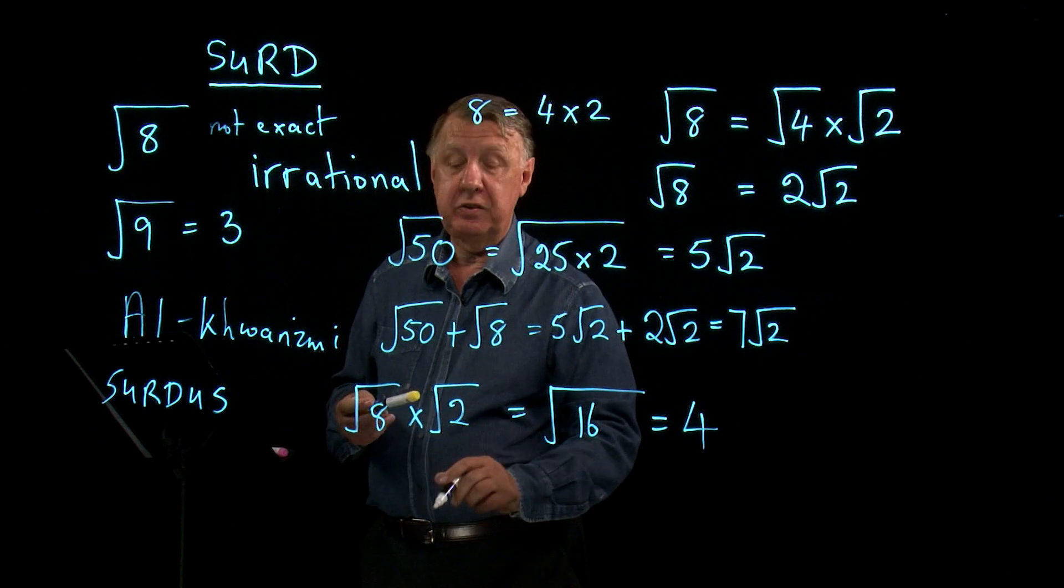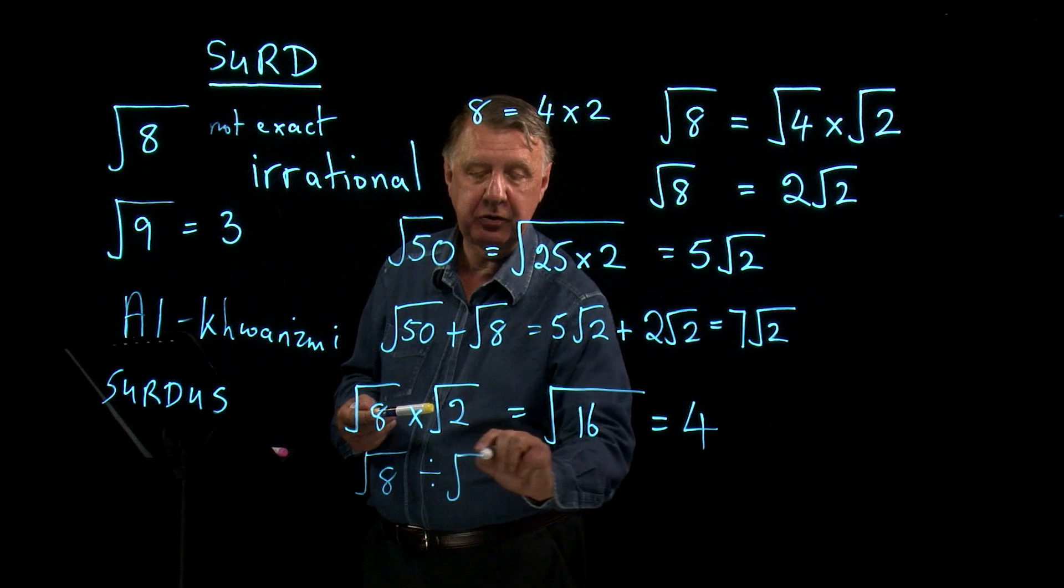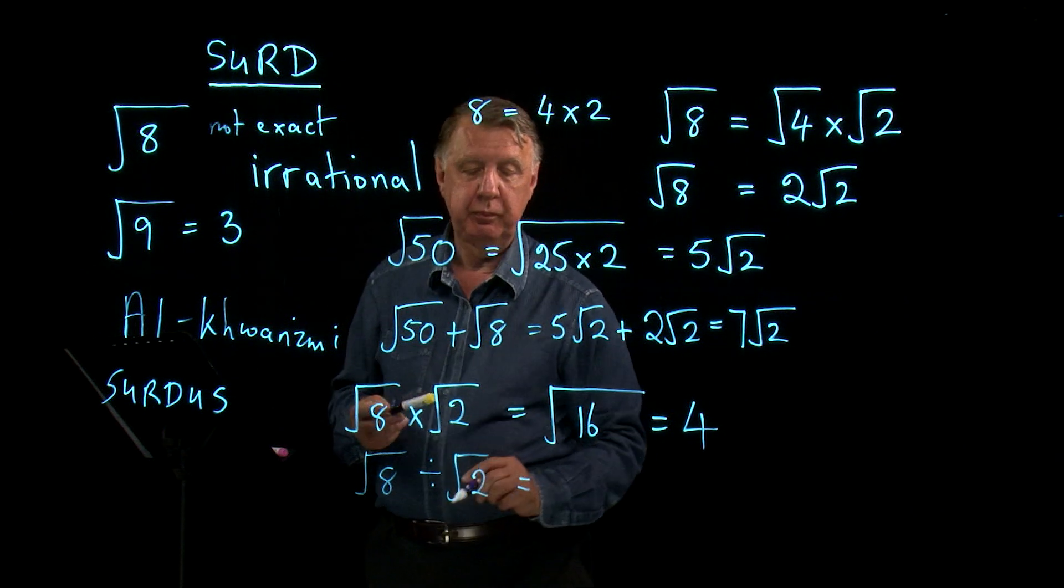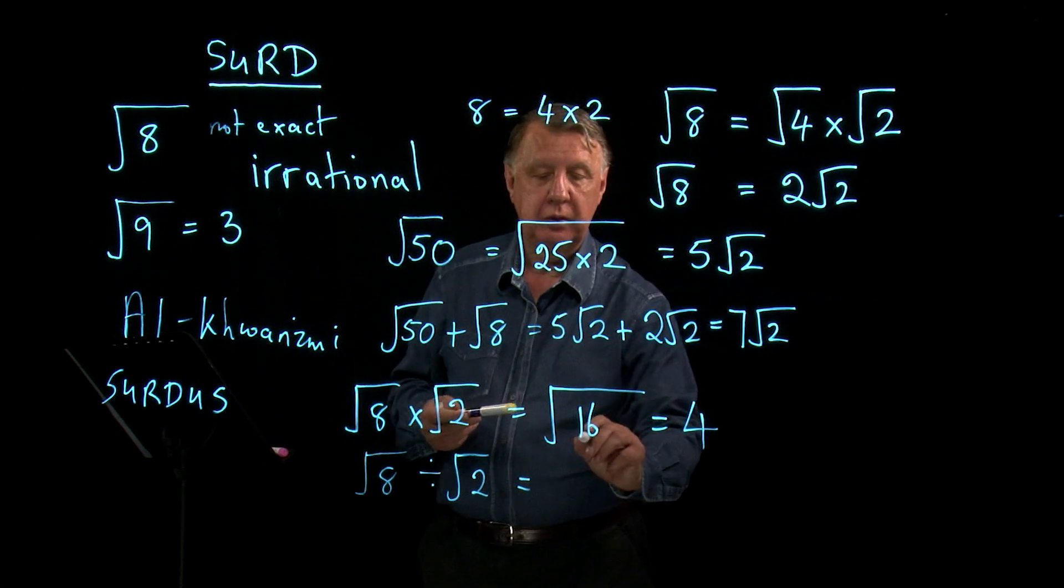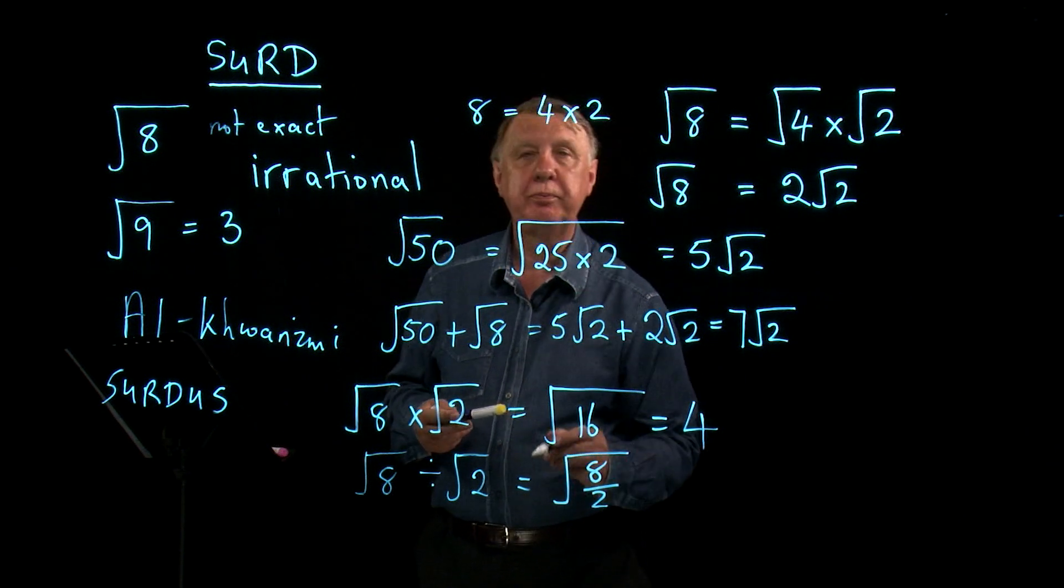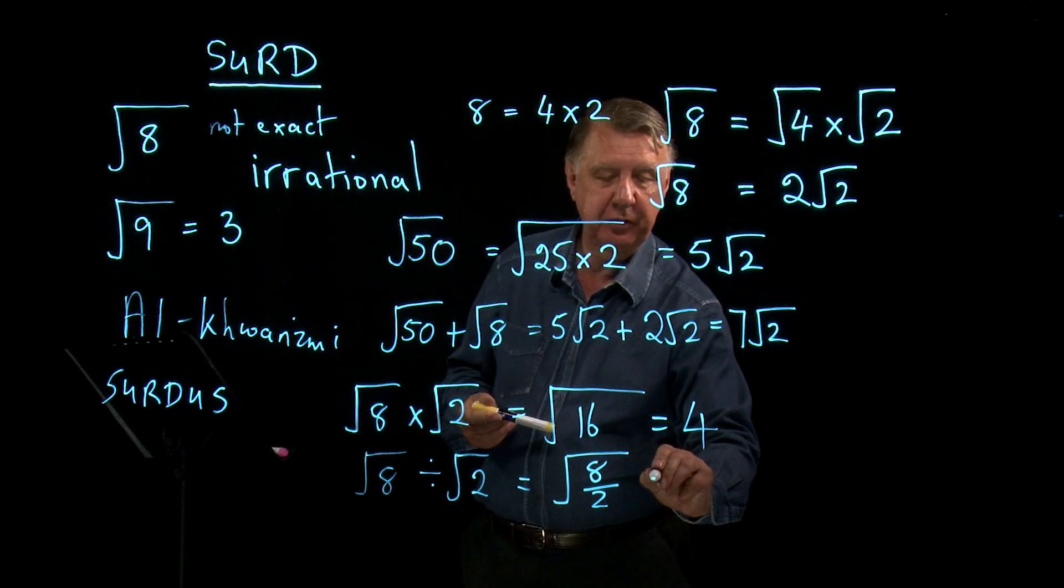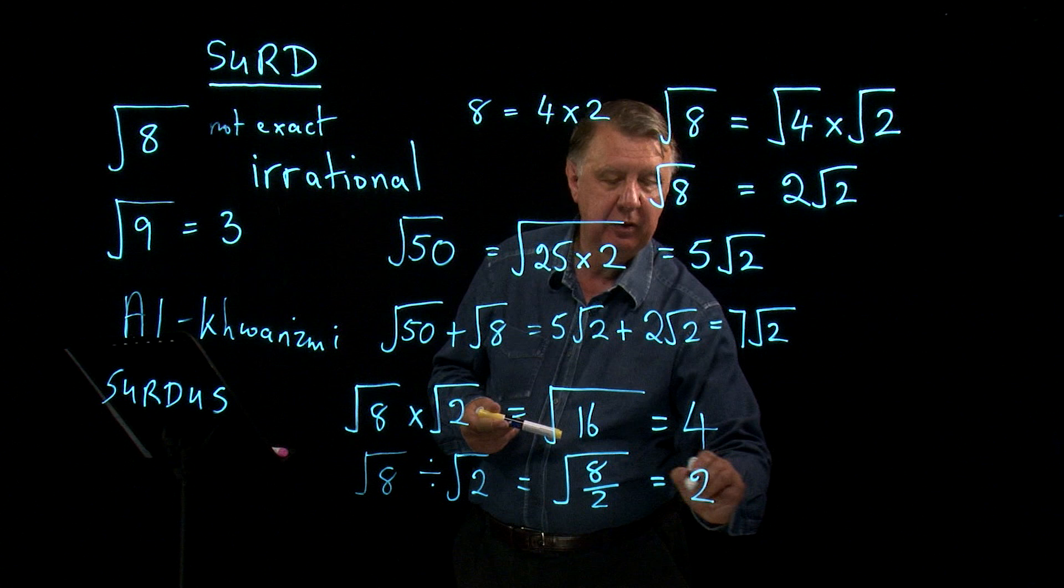The same works with division. The square root of 8 divided by the square root of 2. Let's do the division first. 8 divided by 2, which, of course, is 4. And then the square root of 4 is 2.